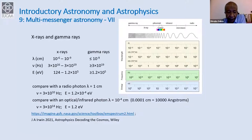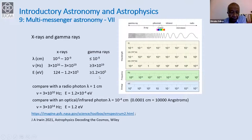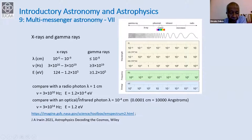You can also look at the energies because E equals h-nu, where h is Planck's constant. X-rays go from 124 to 1.2 times 10 to the power of 5 electron volts, and gamma rays are higher than that. To compare: a radio photon at a wavelength of one centimeter has an energy of merely about 1.2 times 10 to the power of minus 4 electron volts, while photons at the boundary between X-rays and gamma rays are more energetic by a factor of about 10 to the power of 9.